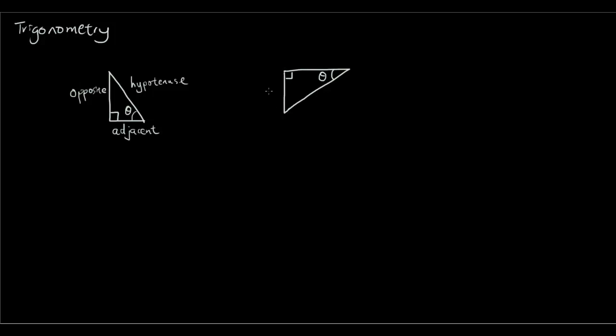Okay, so the opposite side is opposite the θ. The hypotenuse is opposite the right angle. And the last side that we have remaining is the adjacent side.